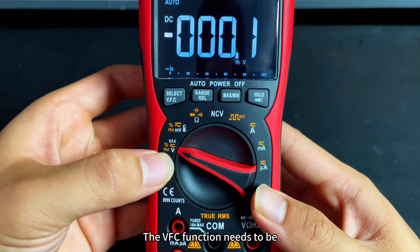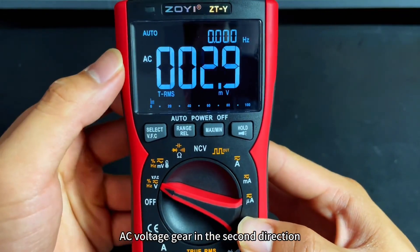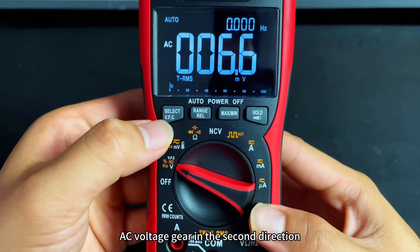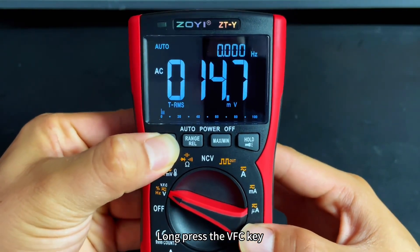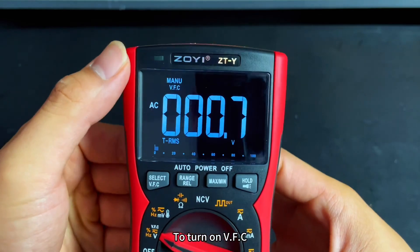The VFC function needs to be in AC voltage gear in the second direction. Long press the VFC key to turn on the VFC.